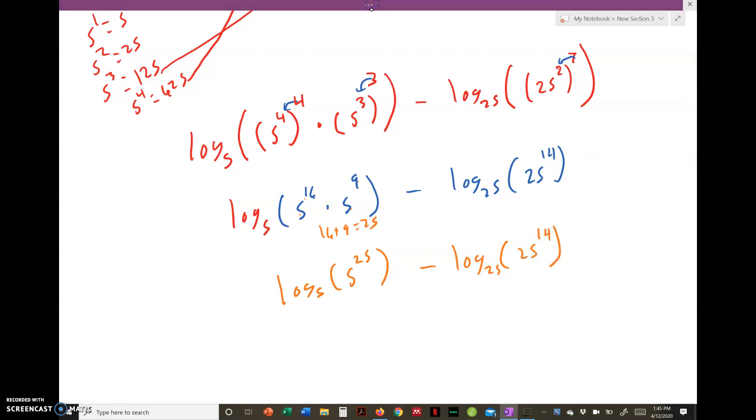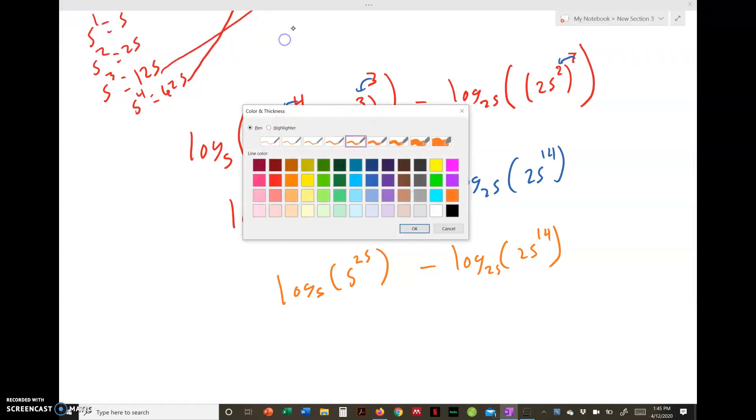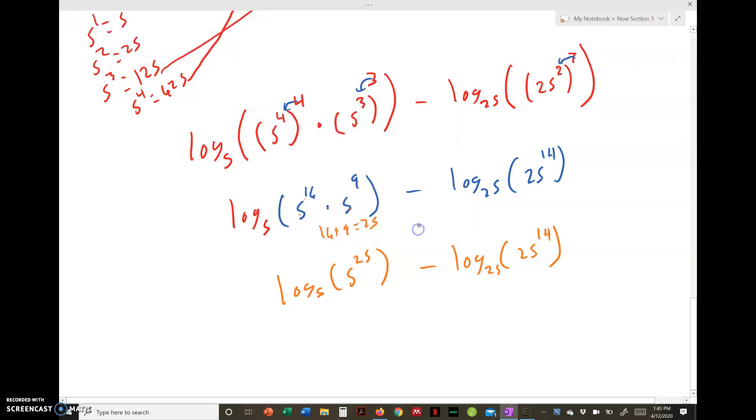And we are answering property 1 with property 4 of log base A of A to a power. So here, log base 5 of 5^25, those 5s cancel, leave us 25. The 25s cancel, leave us 14, which equals 11.